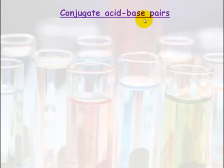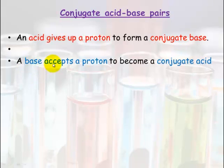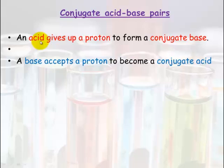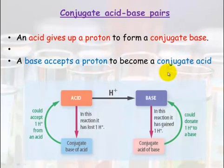Conjugate acid-base pairs: an acid gives up a proton to form a conjugate base. A base will accept a proton to become a conjugate acid. So when an acid loses its proton, it becomes a conjugate base, and when a base accepts a proton, it becomes the conjugate acid of that base. This diagram shows it very well.